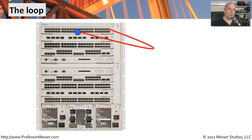Now if we had spanning tree turned on for this particular configuration, the switch would recognize that a loop occurred and was in place. It would block one of those connections. And although you'd be wondering why your configuration isn't working properly, the advantage is that everybody else on the switch continues to operate normally — nobody knows that you had any type of problem associated with that.